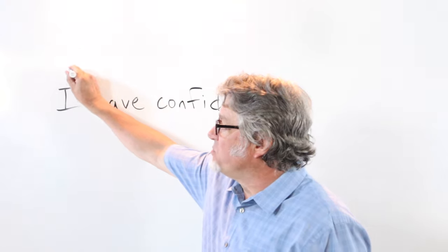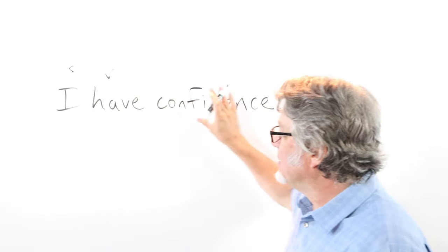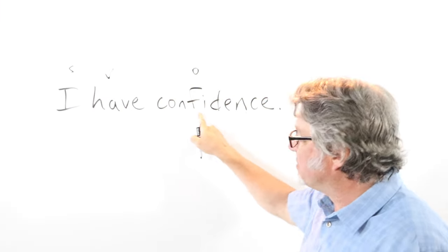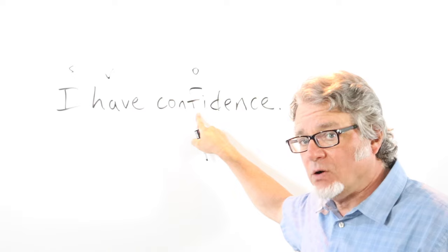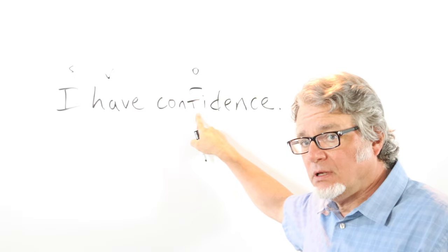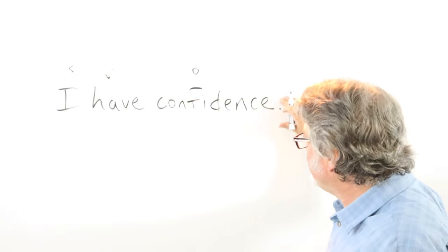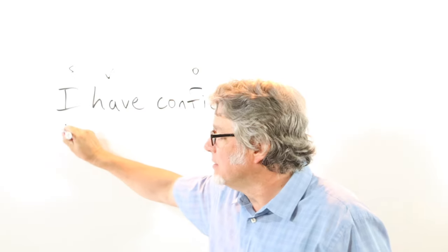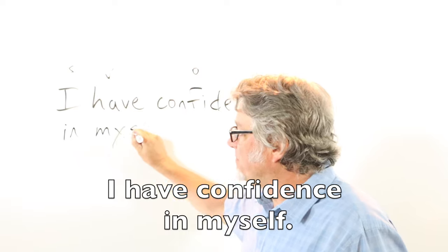This is the subject. Here's the verb. This is the object in the sentence, and this is a noun. I have confidence in myself.